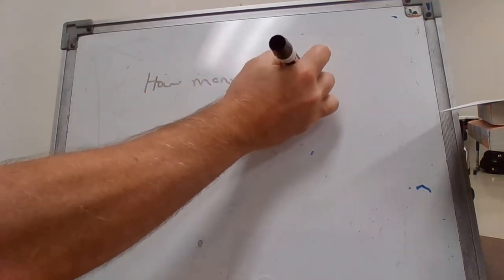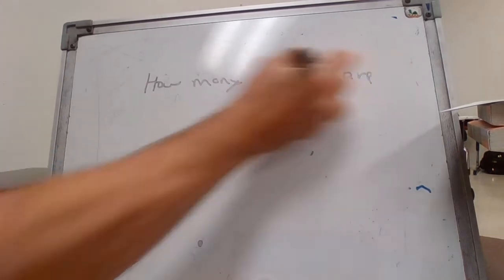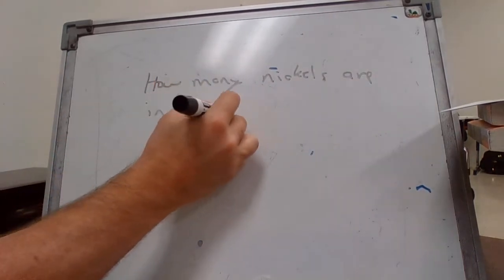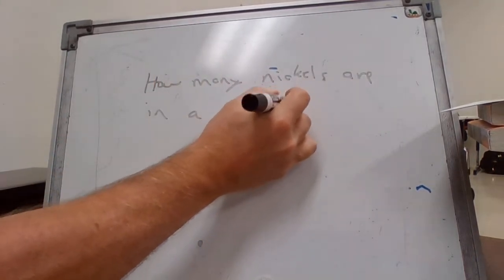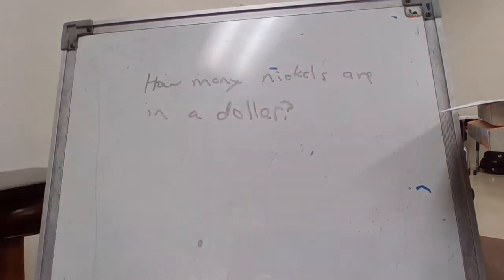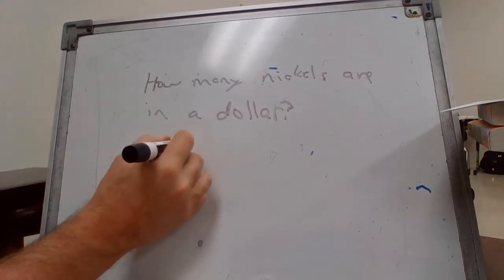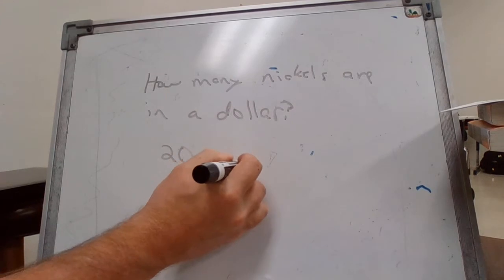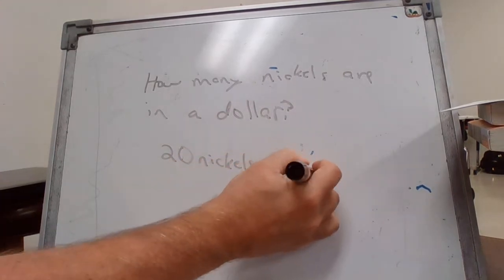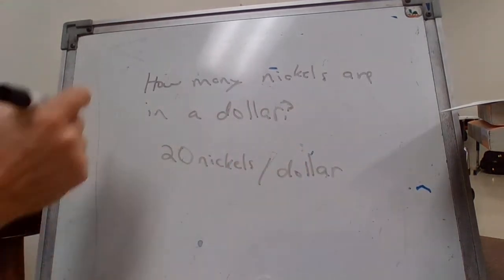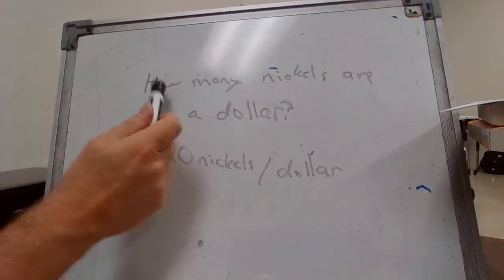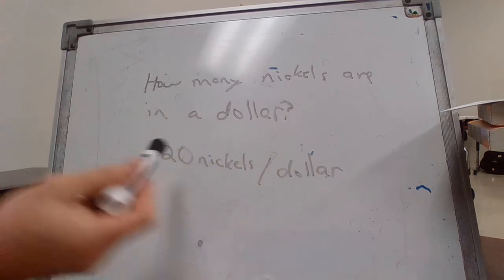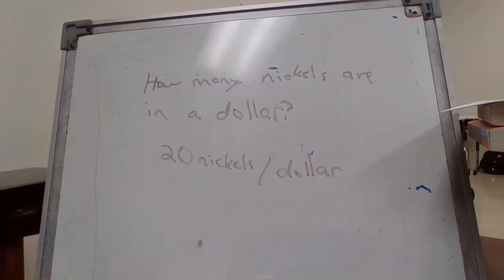Here's an example: how many nickels are in a dollar? If the data can vary, meaning it's different each time, then it's a statistical question. But we know there are 20 nickels in a dollar and that never changes — it's always 20. So this is not a statistical question.